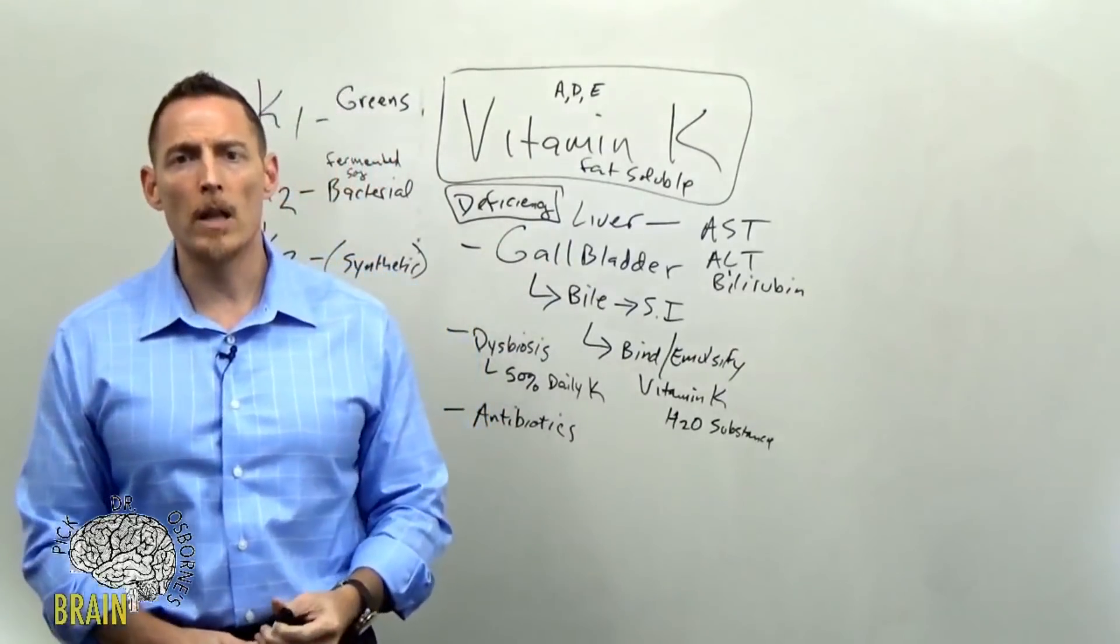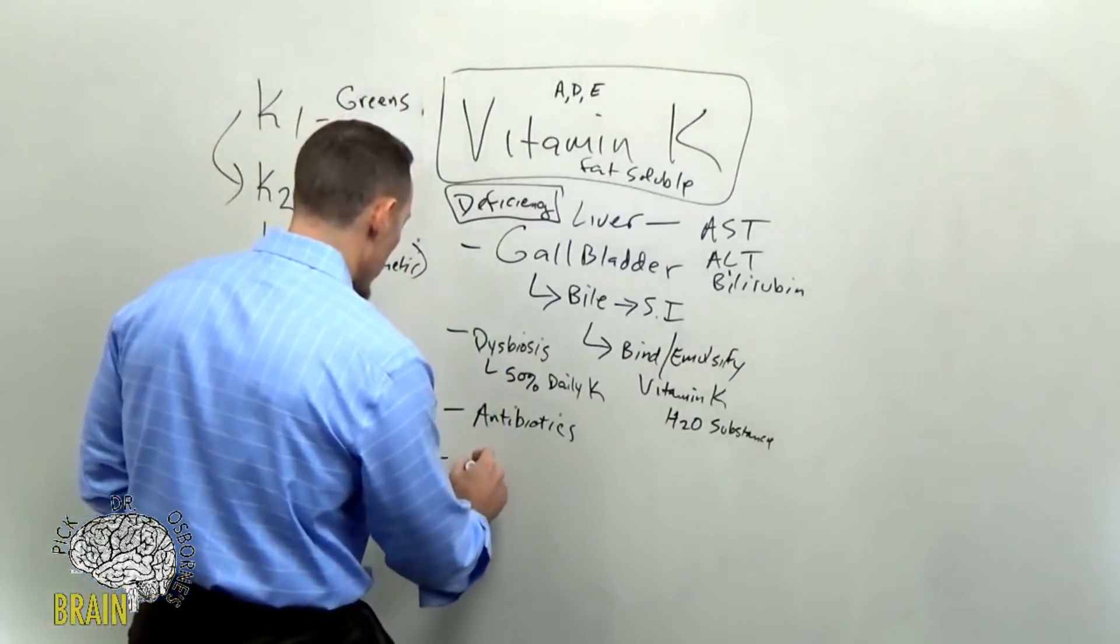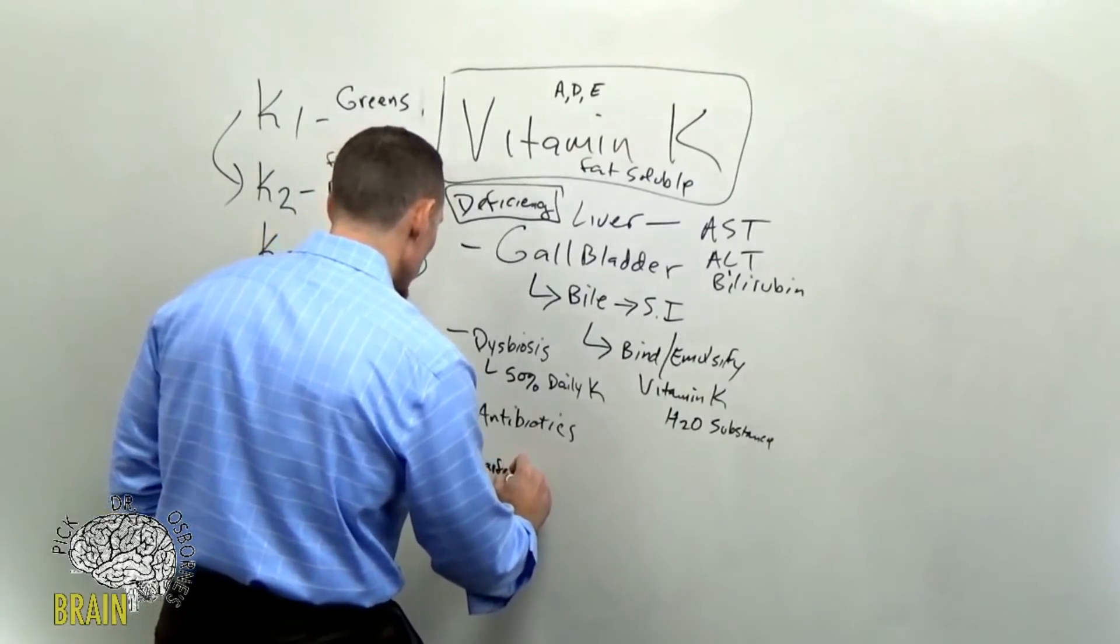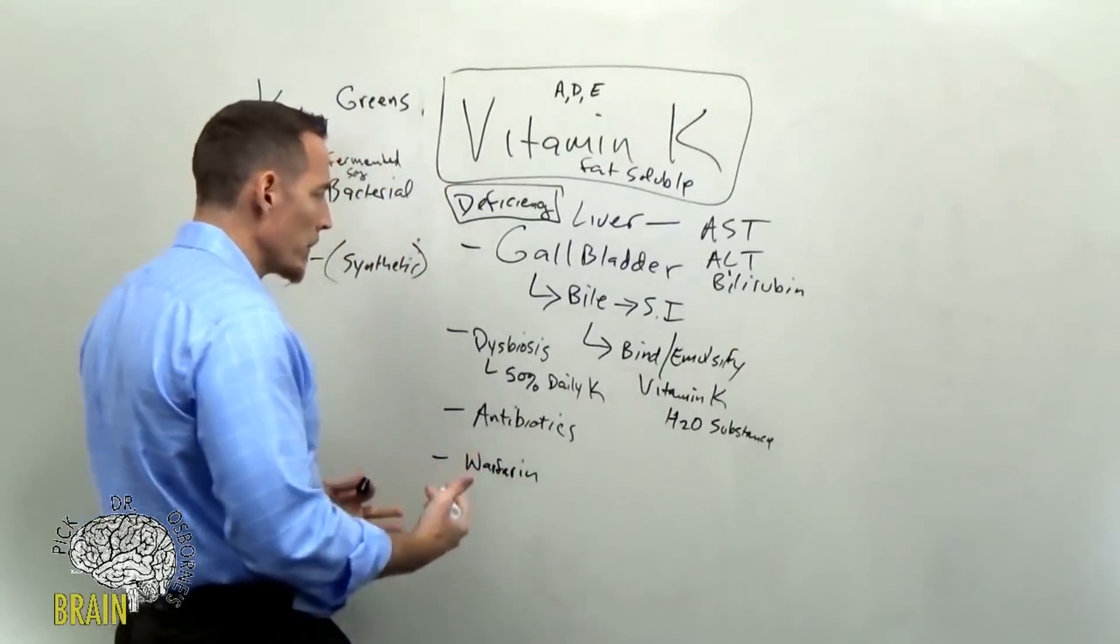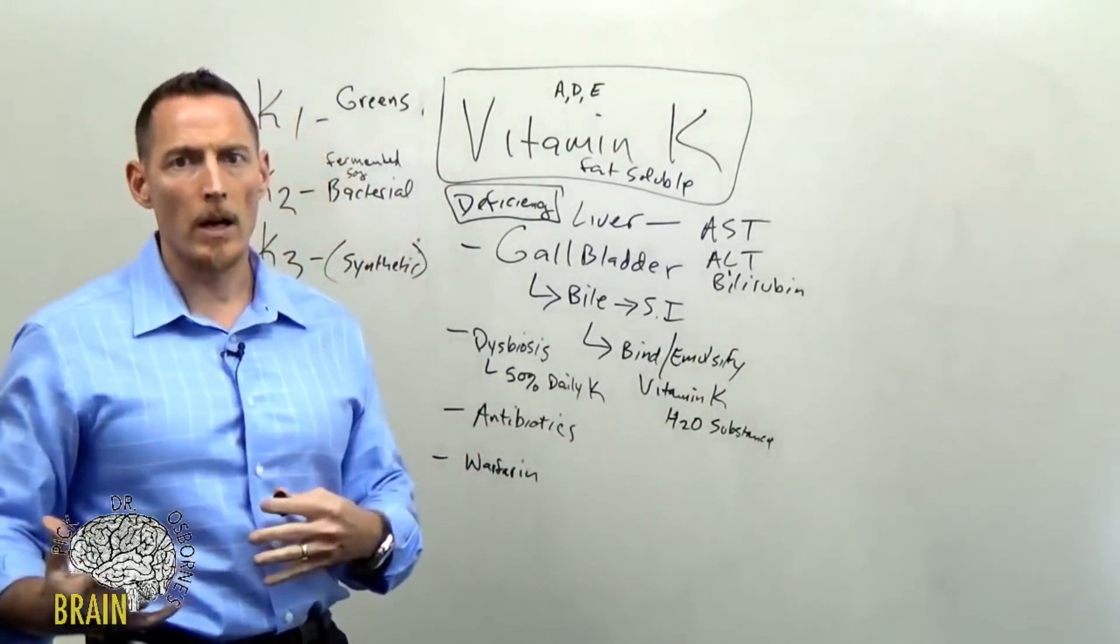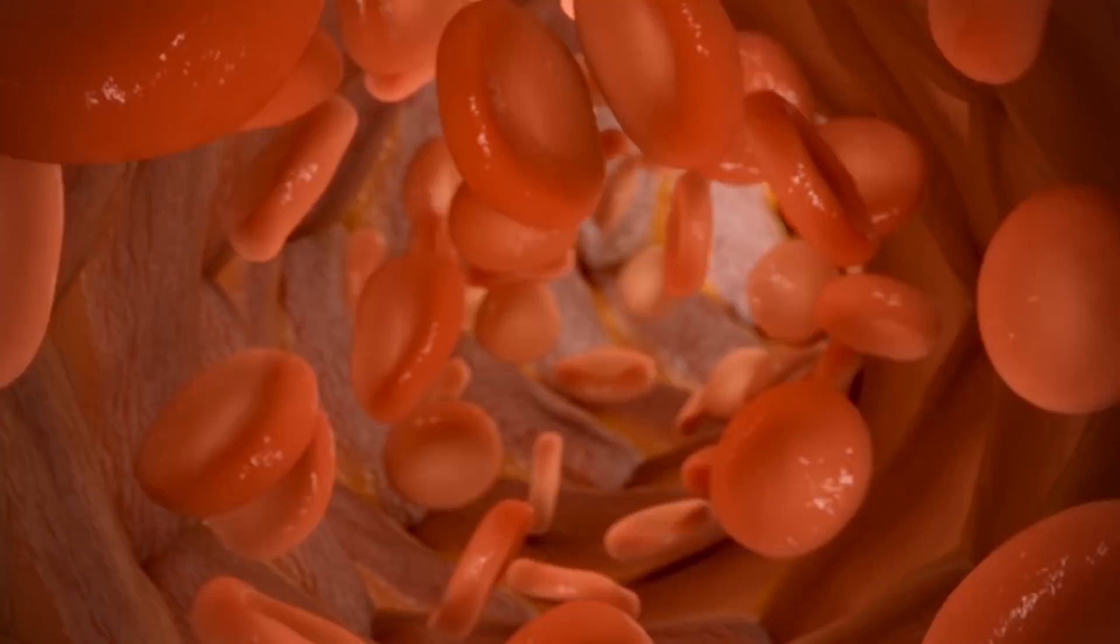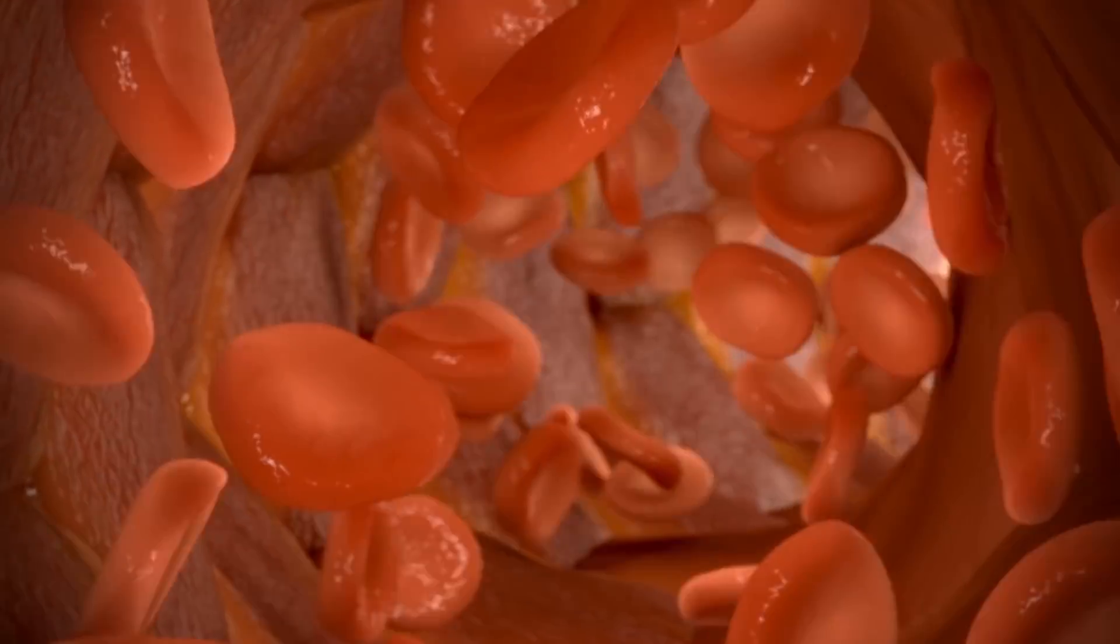If you're on blood-thinning medications, particularly the coumarins—so this would be something like warfarin or Coumadin—these medications that thin the blood actually thin the blood by blocking vitamin K. That's how they work.